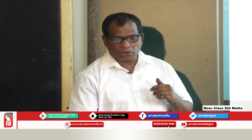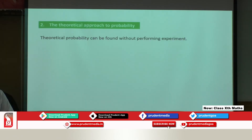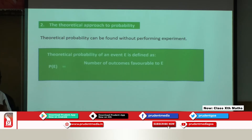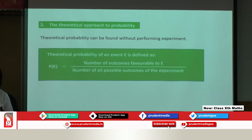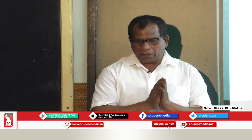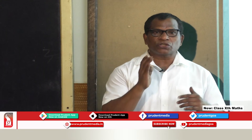Let's move on to the second approach — the theoretical approach to probability. Theoretical probability can be found without performing an experiment. It is defined as: probability of an event E = number of possible outcomes favorable to E divided by total number of possible outcomes of the experiment. This definition was given by French mathematician Pierre-Simon Laplace in 1795.